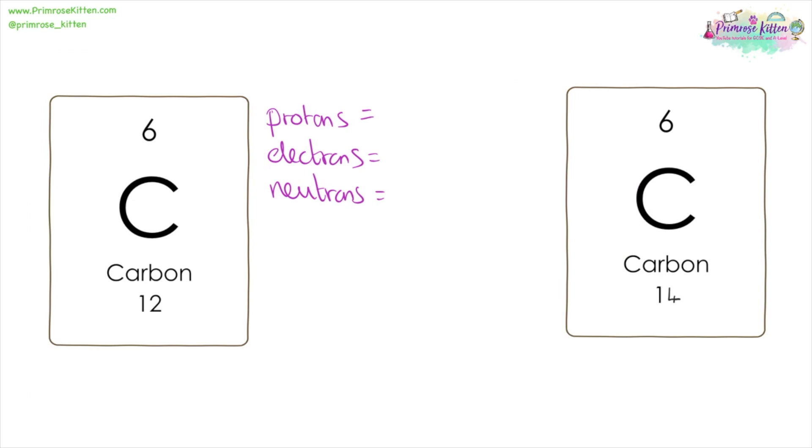Here we have two different isotopes of carbon, carbon-12 and carbon-14. Working out the number of protons is exactly the same. It's the atomic number, so for both of those that is six. The number of electrons in an atom is the same as the number of protons, so that is six. But the neutrons here is different. Because for carbon-12, it is 12 minus 6, giving us six neutrons. And for carbon-14, it is 14 minus 6, giving us eight neutrons.